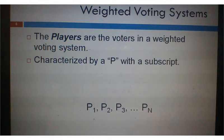And then, let's say for example, if there were eight players in our system, or eight voters, then that would mean the last one would be denoted with P sub 8.